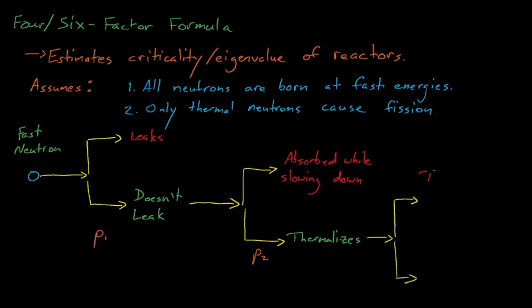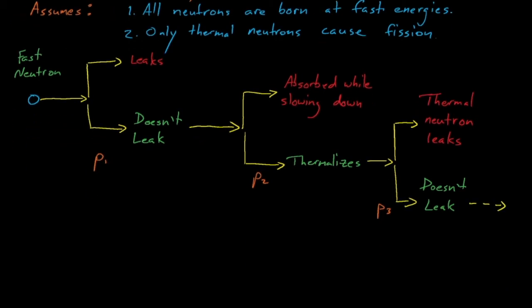Once our neutron thermalizes, it can either leak or it could not leak, and we'll assume that P3 is a probability that our thermal neutron doesn't leak.